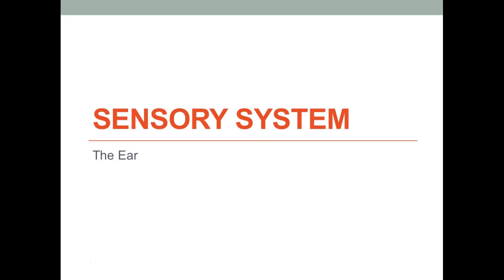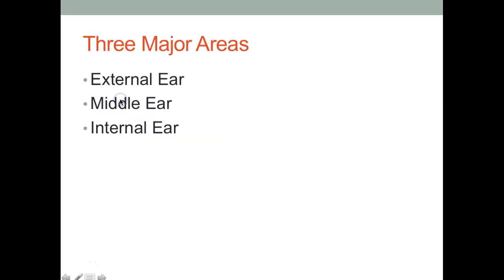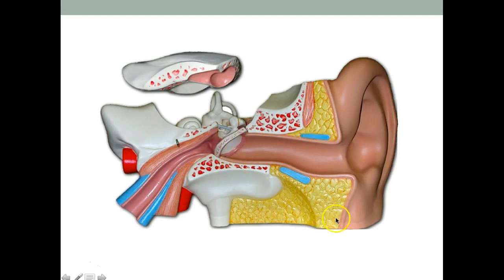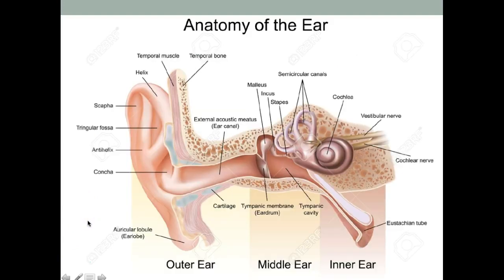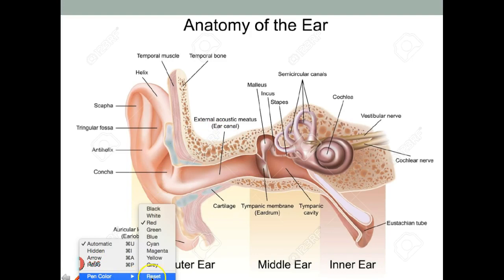Hello everyone. In this video we're going to talk about the structure and function of the ear. There are three major areas of the ear: the external ear, the middle ear, and the internal ear. Keep in mind that these are areas and not specific structures. The external ear is everything outside of the eardrum. The middle ear is this cavity with three little bones, and then we also have the internal ear which contains a complicated small organ called the labyrinth.